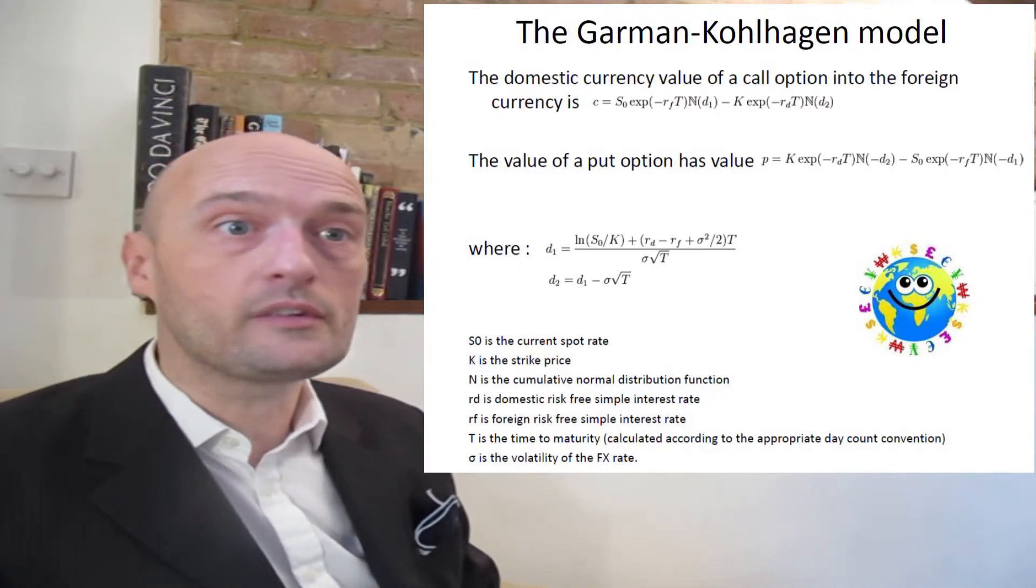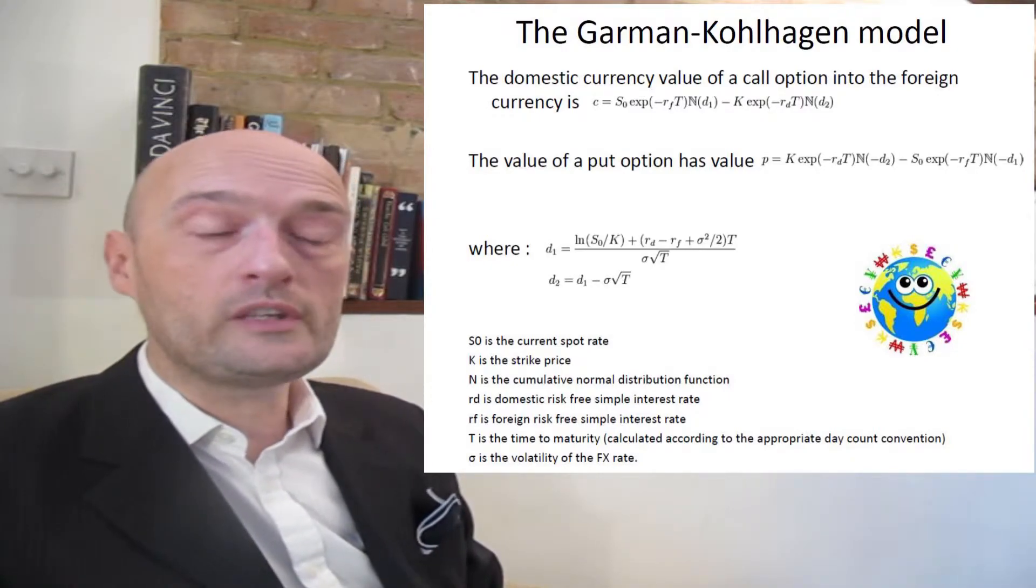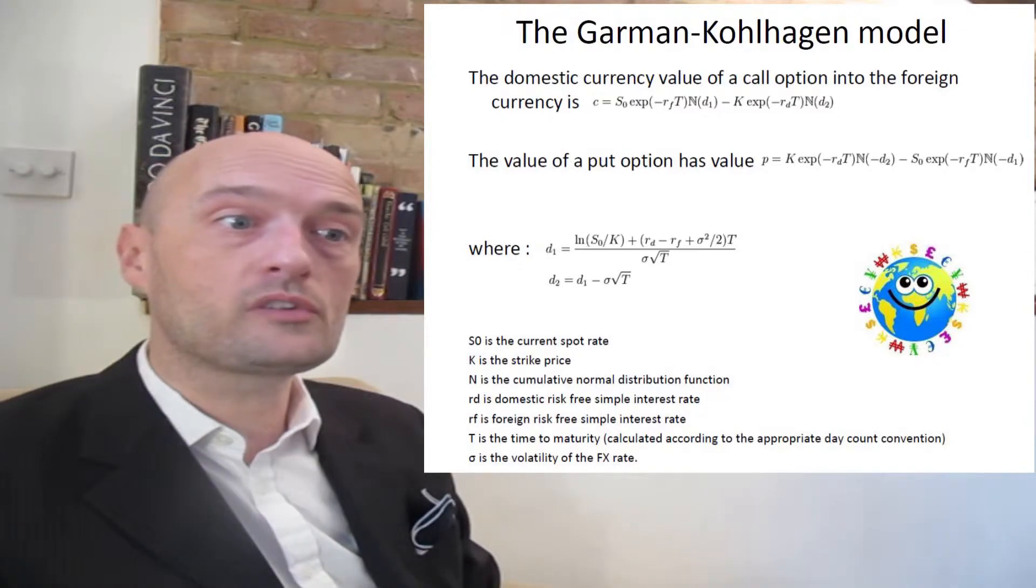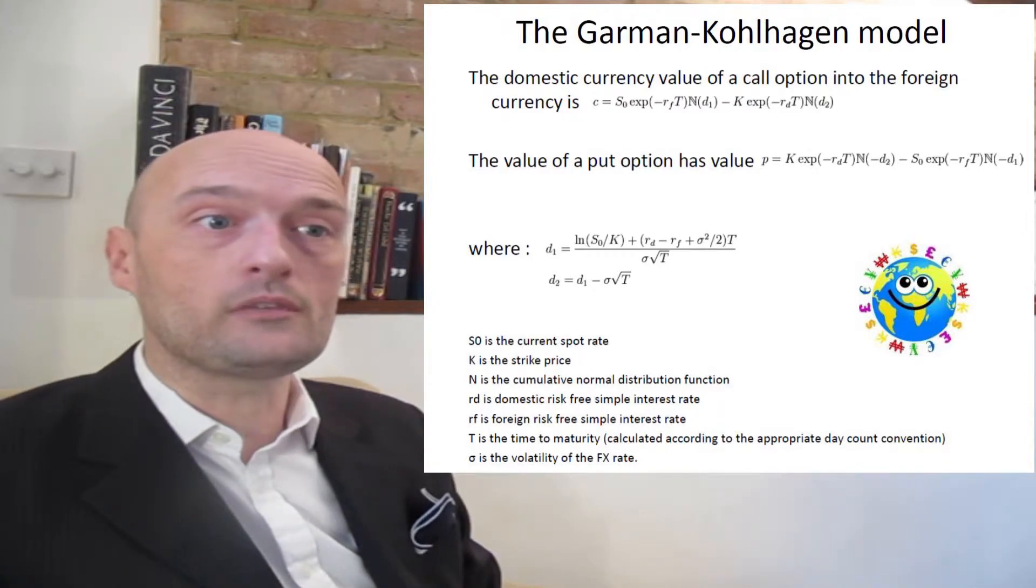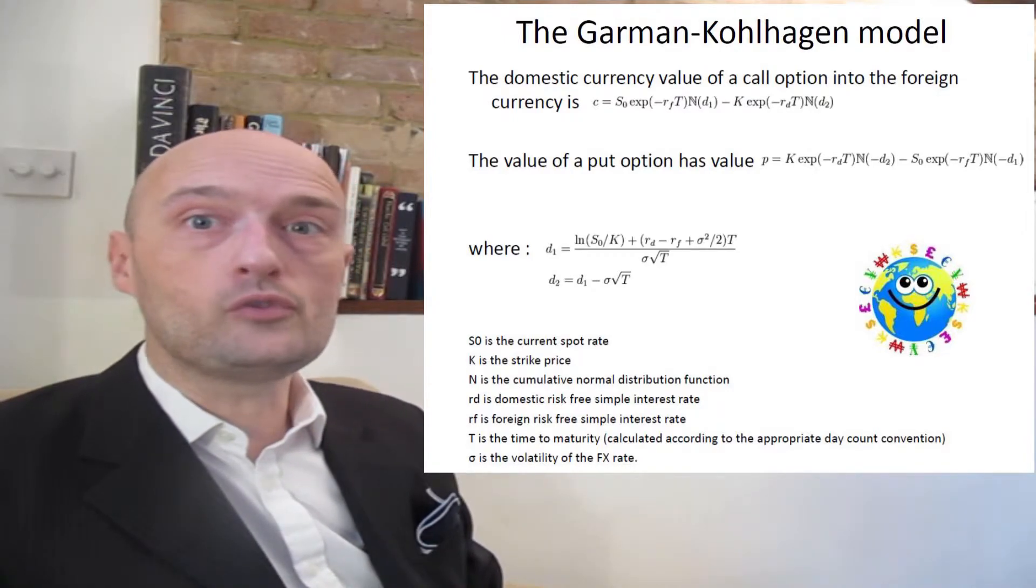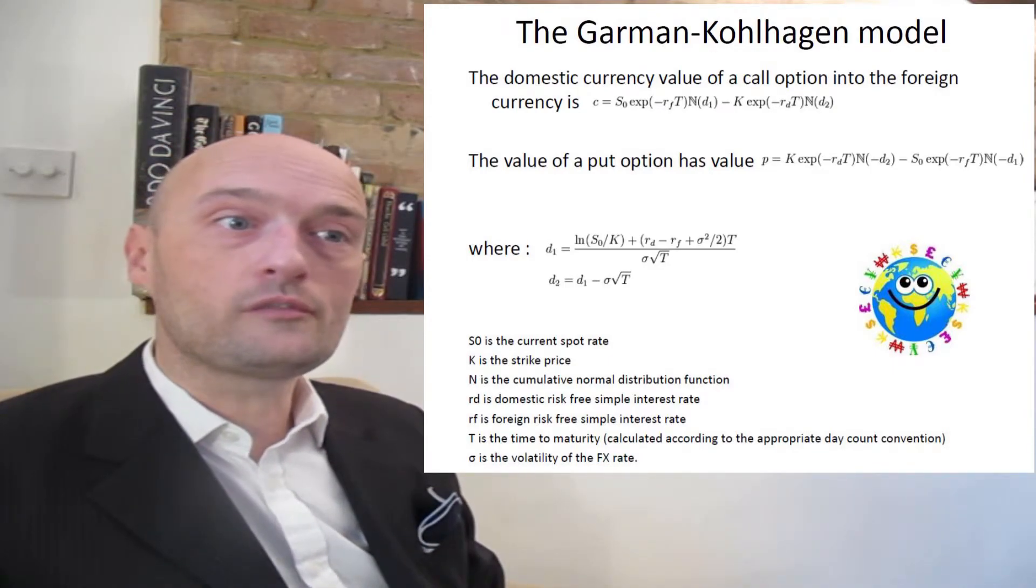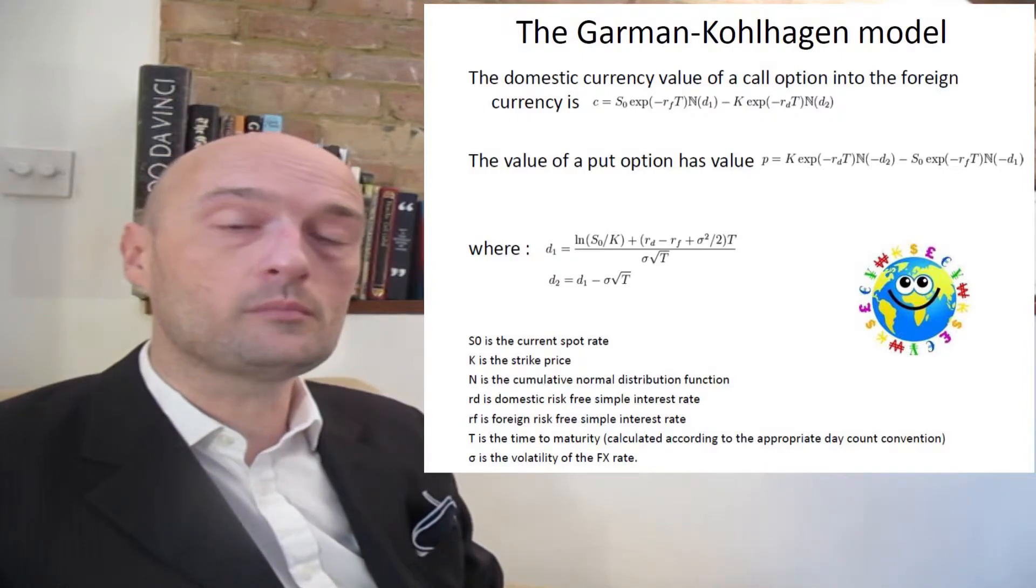Up on the screen right now you'll see the formula for the Garman-Kohlhagen model. As you can see, once again it's a lot like the Black-Scholes model, but we've got in there rd and rf: rd being the domestic risk-free simple interest rate and rf being the foreign risk-free simple interest rate. If you want to pause the video, I'll put a screenshot of the formula up so you can take a look at it and maybe compare it to the Black-Scholes model.